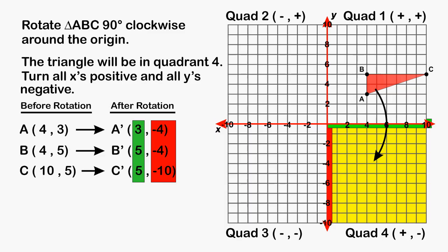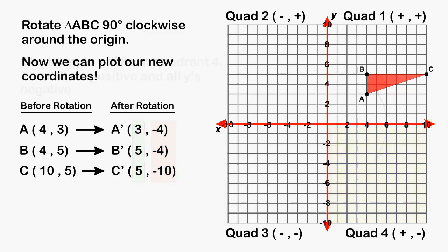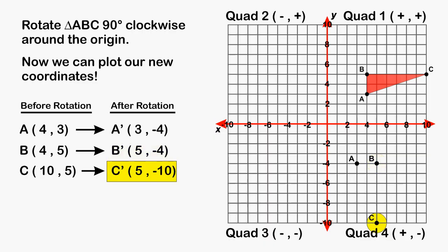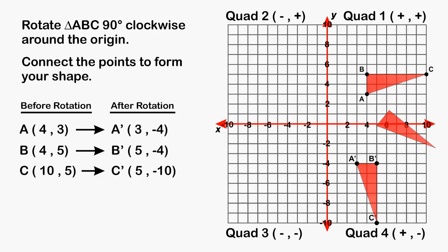Now that we have the location of our new points, we can plot the points on the coordinate plane. So we are going to put point A at (3, negative 4), point B at (5, negative 4), and C at positive 5, negative 10. After plotting those points, we can connect the points to form our shape. This will be the new location of triangle ABC after it is rotated 90 degrees clockwise around the origin.